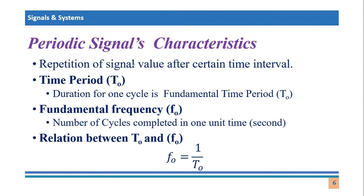Out of the various characteristics, some are very important and I'm going to discuss those here. Number one is the time period. What is the time period? The time period is the duration of one cycle. The duration for one cycle is called the fundamental time period, or simply the time period. The second characteristic is related to cycles as well — the number of cycles completed in one unit of time, which is of course one second, is known as frequency, or fundamental frequency.